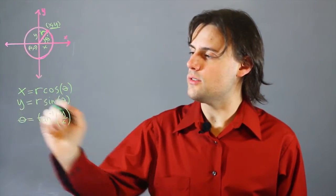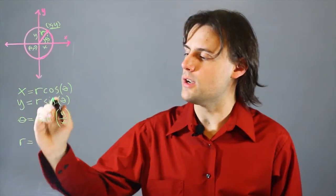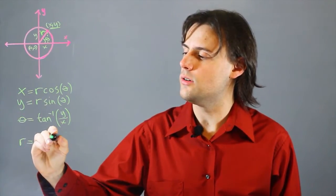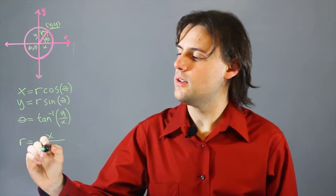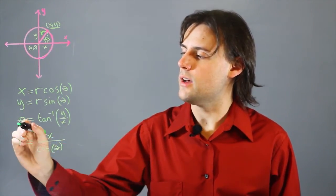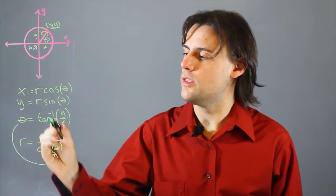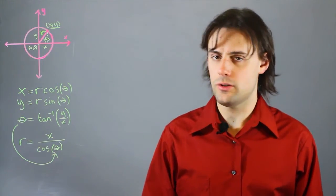And I can use either of these equations to solve for the radius. So using the top equation I have r is equal to my value of x divided by cosine theta. Where for theta I would plug in this expression because I know my y and I know my x.